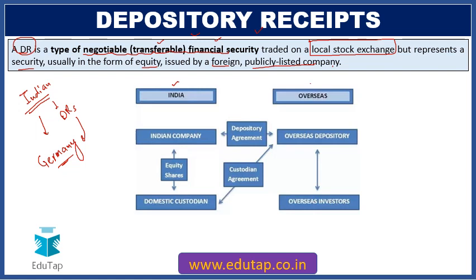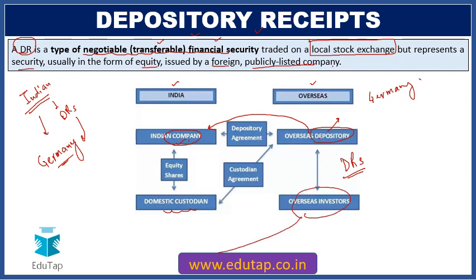Here is the framework more clearly: there is an Indian company and a foreign territory — say Germany — in which it wishes to list its shares or raise money. The Indian company appoints a domestic custodian and gives its equity shares to that custodian. The domestic custodian has an agreement with the overseas depository, which in turn has a depository agreement with the Indian company. In lieu of these equity shares, the overseas depository issues depository receipts to overseas investors, allowing them to access the Indian company's shares.